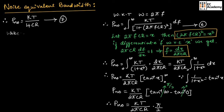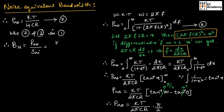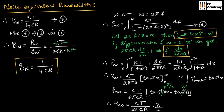Using equation 7 and equation 2 in equation 1, BN is equal to PN0 divided by SNI, where PN0 is KT divided by 4CR and SNI is KT. Cancelling KT from numerator and denominator, BN is equal to 1 by 4CR. This is the expression for noise equivalent bandwidth, and it is one of the important questions in examination — they will ask: what is noise equivalent bandwidth? Derive the expression for the same. I hope you have understood the topic. Thank you.